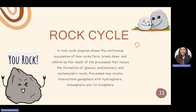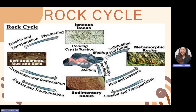This diagram shows the rock cycle. As you can see, it is a series of geological processes such as erosion, transportation, weathering, compaction, sedimentation, melting, subduction, burial, and heat and pressure. We will discuss all those processes, but first let's define the three types of rocks.